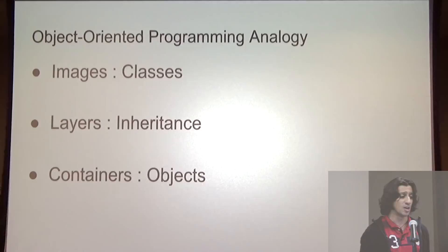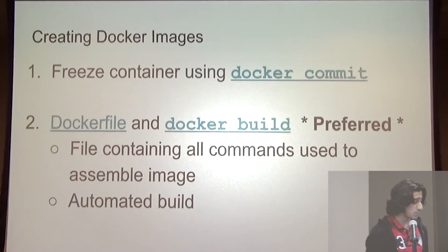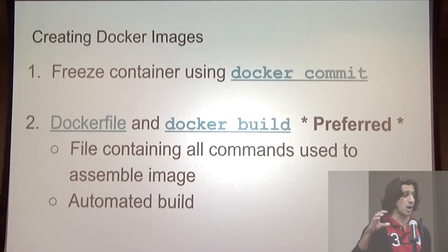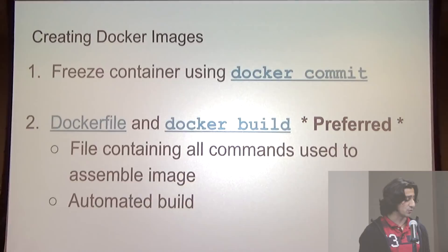We can create Docker images two different ways. The first is by freezing the container using the docker commit command, which takes the top read-write container layer and makes it read-only — then we can use that new image to initialize new containers. The more preferred way is to use a Dockerfile and the docker build command. A Dockerfile is a file containing commands used to create an image, and we can automate our build process using docker build.